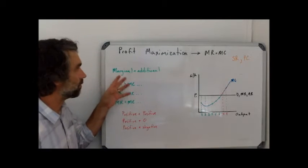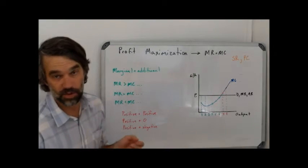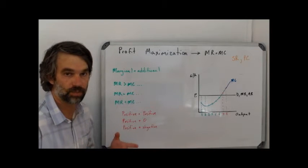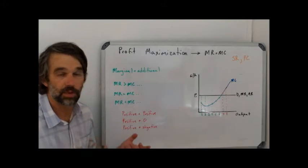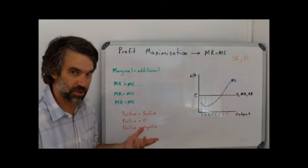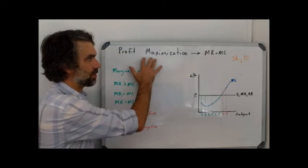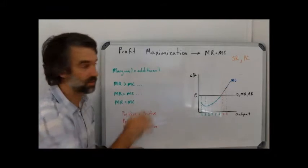In theory of the firm, we assume that most firms want to profit maximize - that is, they want to make as much profit as possible. Now this is only an assumption, and we'll talk later on about some other goals that some firms may pursue, but as a simple rule of thumb, we're going to assume that this is true in most cases.